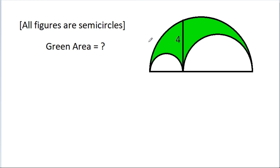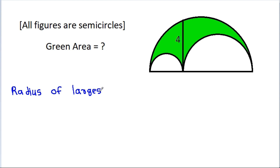In this video, we have to find this green area. Suppose the radius of the largest semicircle is equal to R.